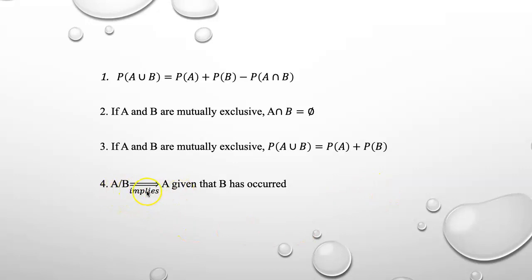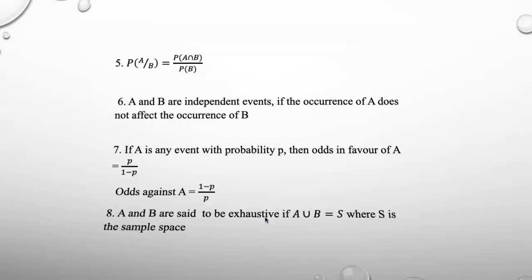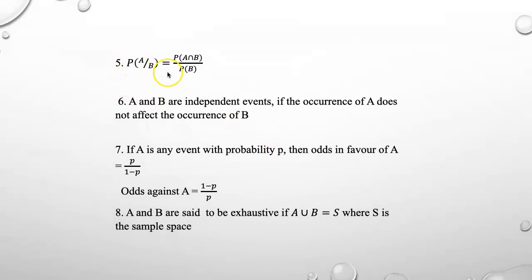Now A slash B implies A given that B has occurred. So probability of A given B is probability of A intersection B by probability of B.